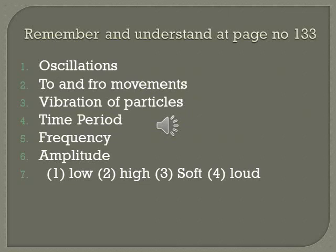At page number 133, there is an activity — Remember and Understand. You have to do this activity in your book and learn it. Number 1: Oscillations are regular to-and-fro movements of a swinging body. Number 2: An oscillation is also called a to-and-fro movement. Number 3: Vibration of particles causes sound waves to travel through the air. Number 4: The time taken for a complete oscillation is called the time period. Number 5: Frequency is the number of oscillations completed in one second. Number 6: The extreme position of a pendulum from the central position is called amplitude. Number 7: Identify the sound wave as low, soft, high, and low — first is low, second is high, third is soft, and fourth is loud.